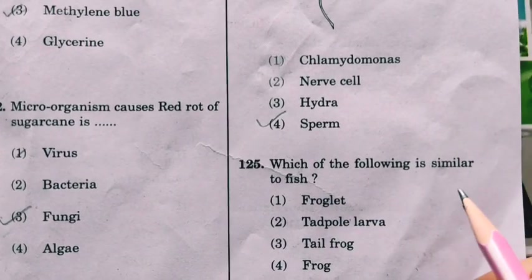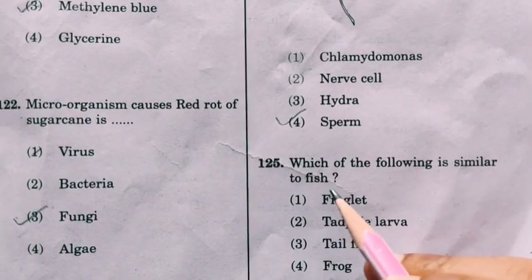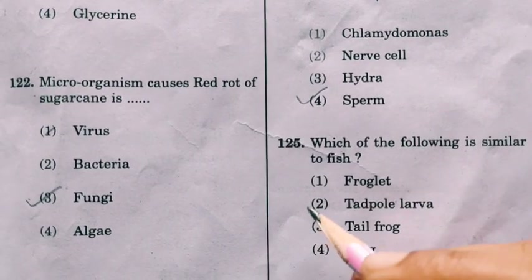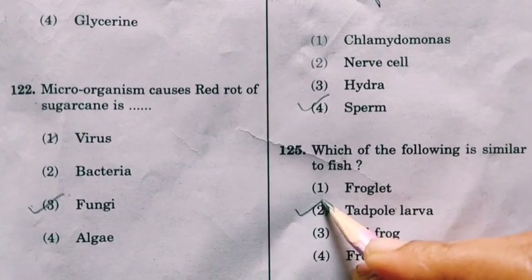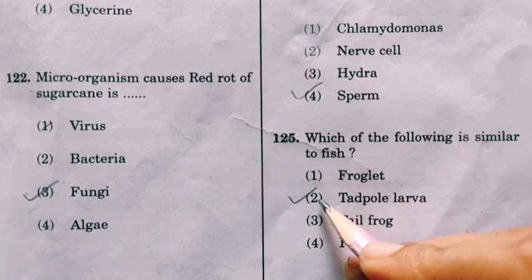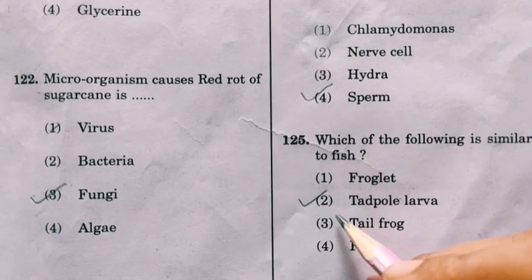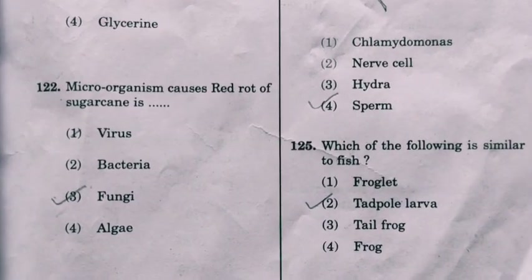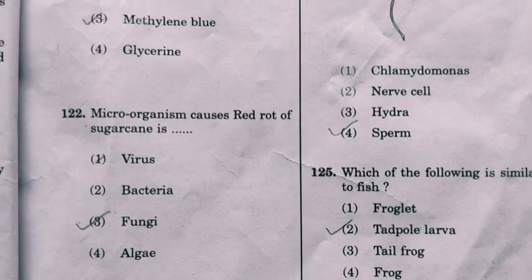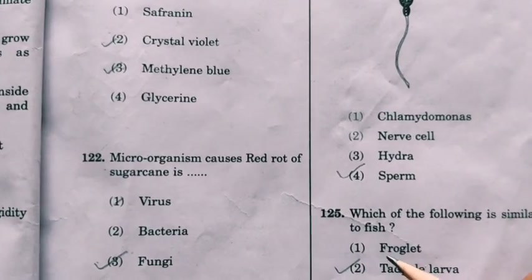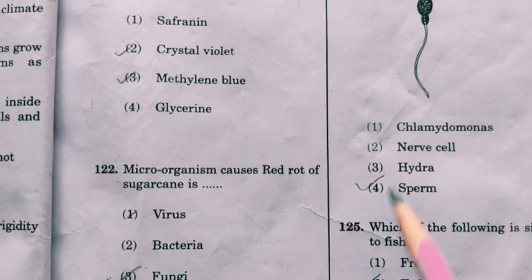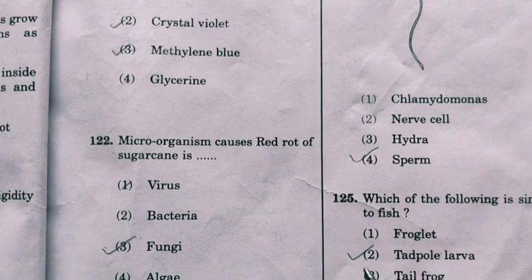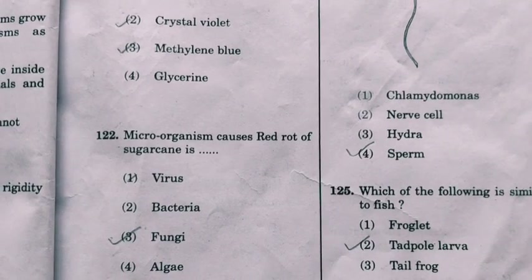The last question: which of the following is similar to a fish? The frog larva, that is the tadpole larva, appears similar to a fish when it is in its larval form. These are the answers for today's NMMS question paper of science — that is physics, chemistry, and biology.